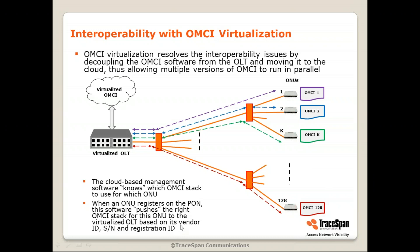The virtualized OLT knows that this ONU can use OMCI version one, this one version two, this one version K, and so on. Based on the vendor ID, serial number, and registration ID, the virtualized OMCI pushes the right version for each ONU. A version means which managed entities are used, which OMCI version is used, which optional managed entities are used, which vendor-specific ones are used, and so on.